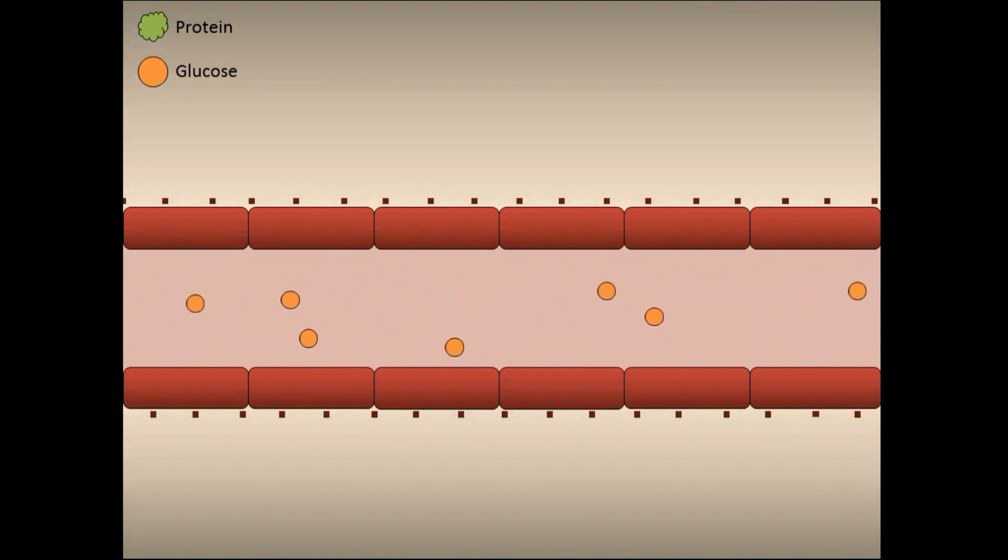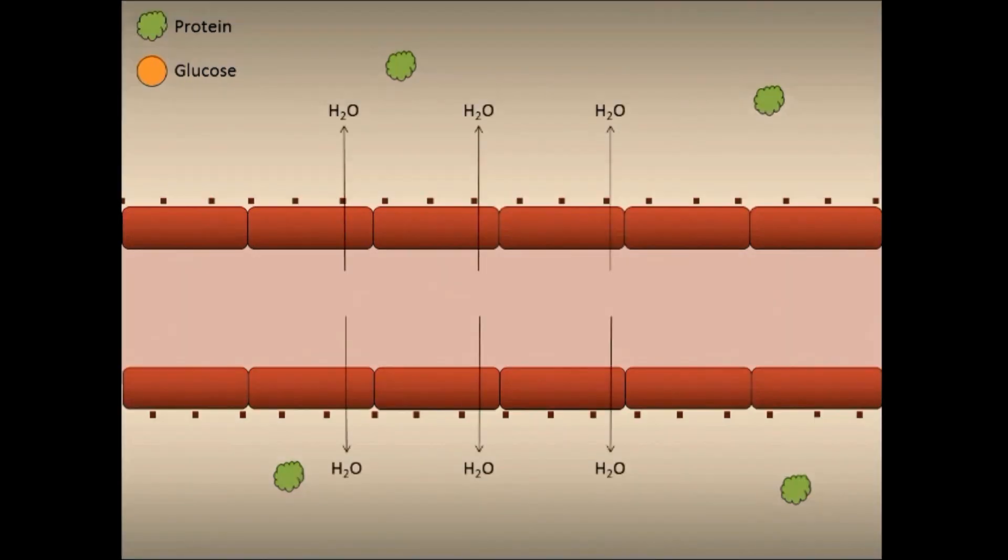When its pores are enlarged, proteins from the blood leak into the surrounding tissues. Water follows the protein into the tissues and presses back against the blood vessels, causing them to constrict.